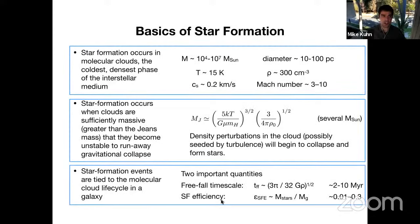The basics of star formation: stars form in molecular clouds, which are the coldest, densest phase of the interstellar medium. These clouds can have masses of tens of thousands to millions of solar masses and span large portions of the galaxy. They're quite cold, with sound speeds of only a few tenths of a kilometer per second, meaning turbulence in the clouds is moderately supersonic. Star formation occurs when sufficiently massive density fluctuations collapse — this is called the Jeans mass — and these fluctuations can be seeded by supersonic turbulence.